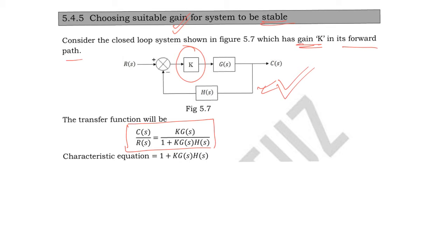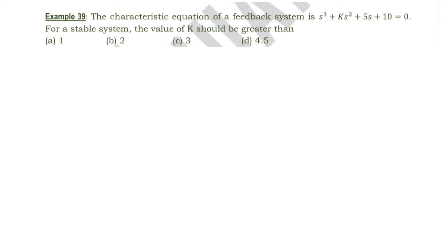The characteristic equation will be 1 plus k·G(s)·H(s) equal to 0. We can see that the roots of the characteristic equation will now depend on the gain k, so using a suitable gain we can ensure that the system is stable. To understand this, consider an example where the characteristic equation of a feedback system is s³ + ks² + 5s + 10 = 0.